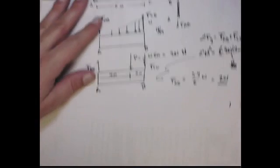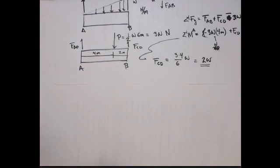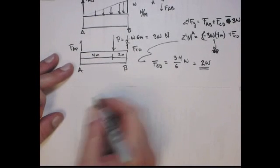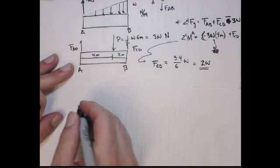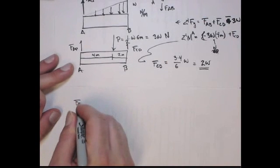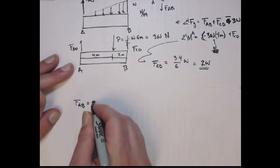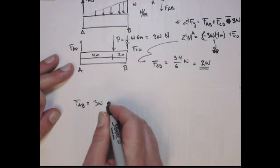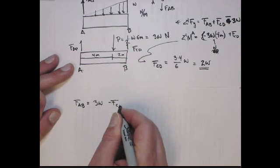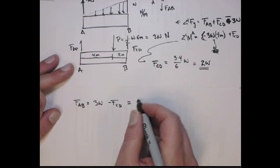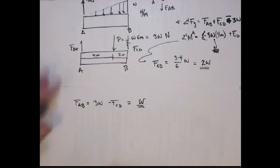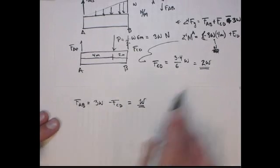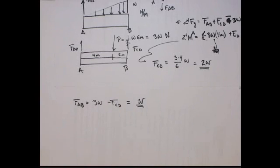So from that equation, I can actually get FCD. This one will give me that FCD is equal to 3 times 4 over 6W, and that's going to be in newtons. So that's 2W. So that's the force in element CD in terms of the magnitude of this distributed load, W. Now doing this, the sum of forces in the y, we can get the force in AB. So using the sum of forces in the y, this one, we get FAB equals 3W minus FCD, which we already know is 2W. So that just gives me W. So the force in AB is half of the force in CD. So those are the forces.